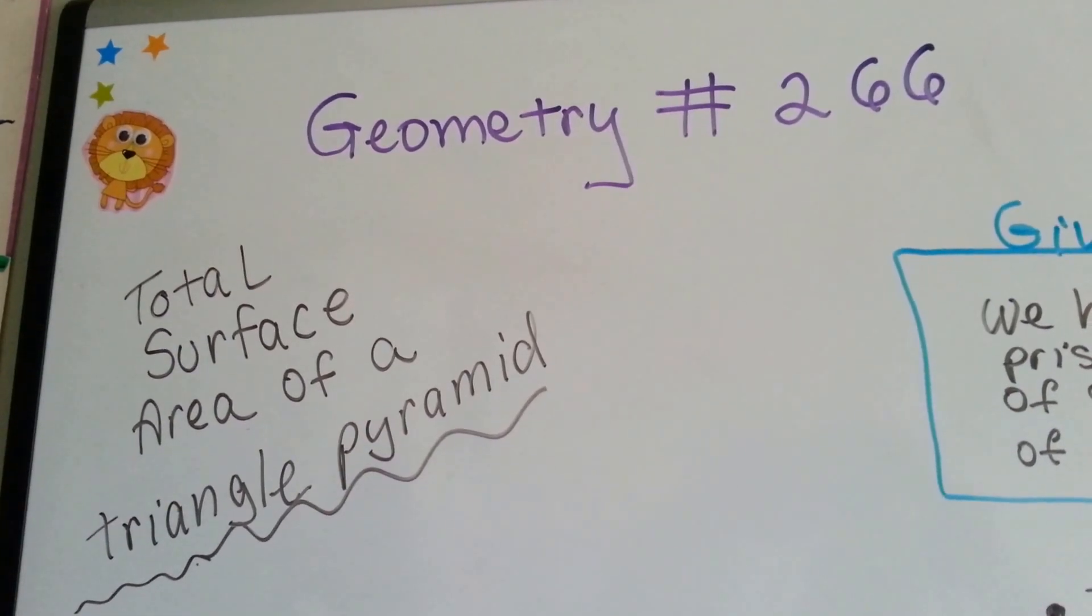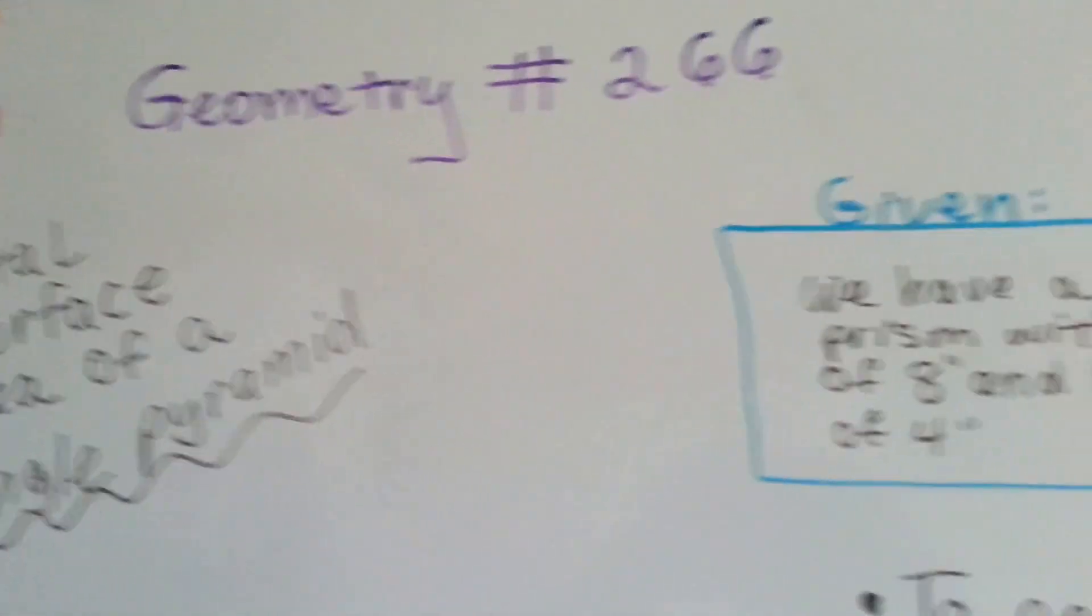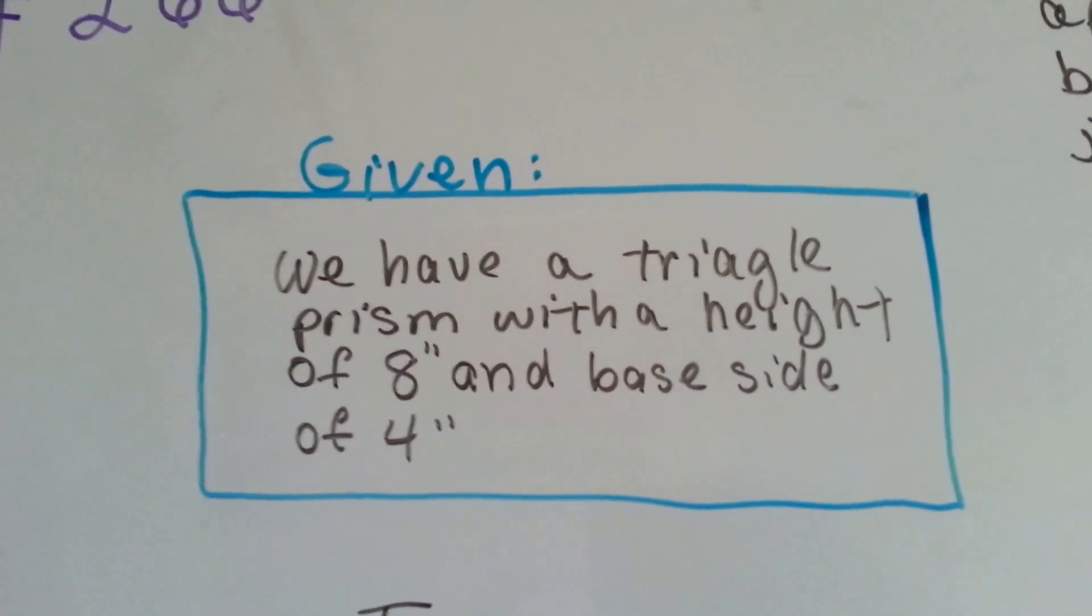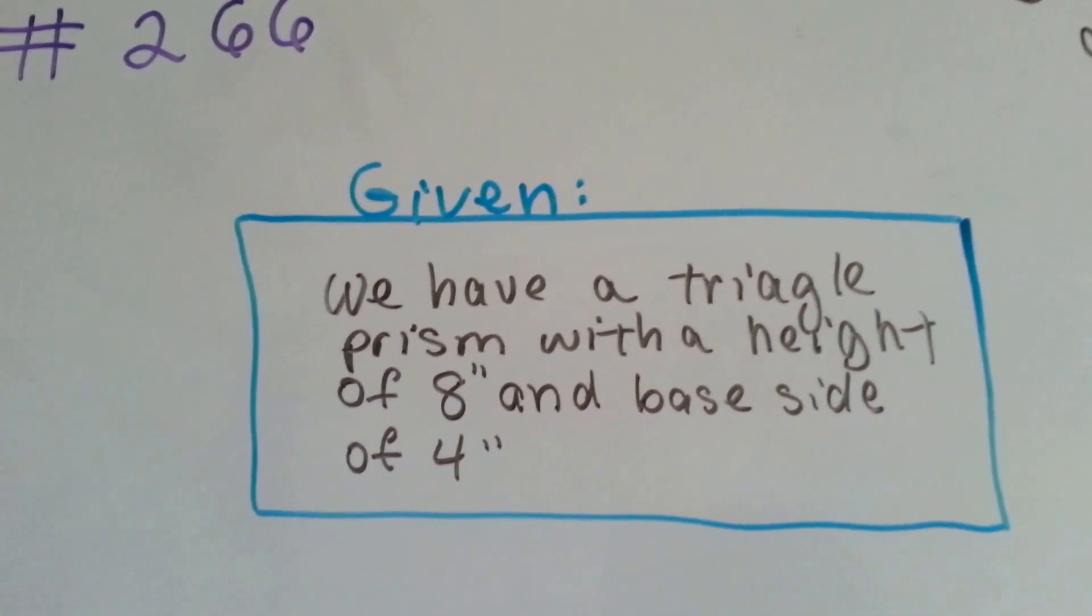Geometry number 266, Total Surface Area of a Triangle Pyramid. Okay, let's take a look at what we've got here. This is our given. We have a triangle pyramid with a height of 8 inches and a base side of 4 inches.